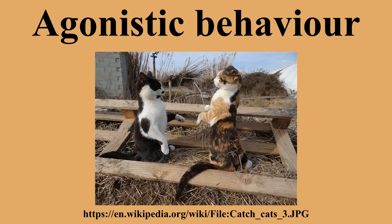For example, the frill-necked lizard, Chlamydosaurus kingii, an Australian agamid lizard, uses its frill as a way to display size and aggression to opponents. It is one of the largest and most notable displays seen in the animal kingdom. In comparison to its body size, the frill can flare out to make the lizard's head look several times bigger, and it displays bright orange and red scales. Males fight and display frills often during the mating season. The male ritualistic display includes repeated partial erections of the frill, head bobbing, tail lashing, and waving of forelimbs.